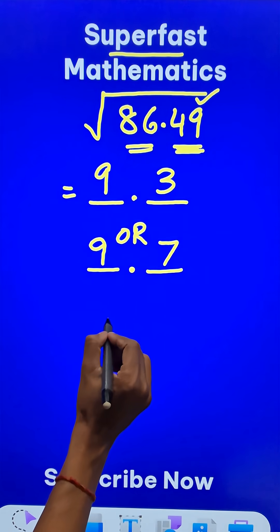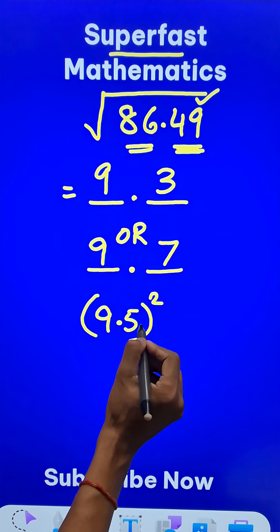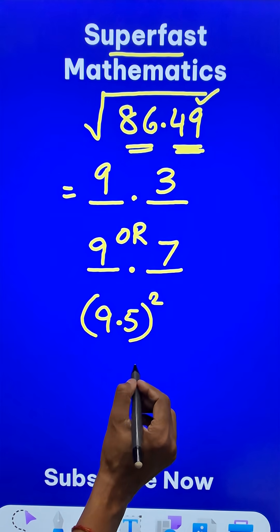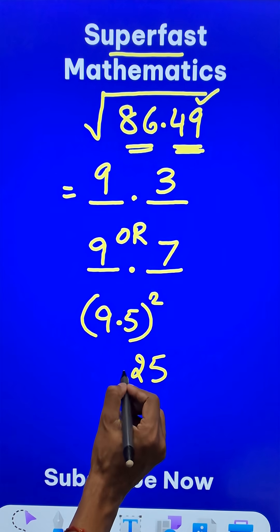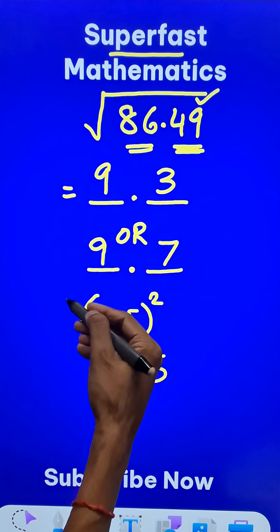Now for that I will try to do 9.5 square. What is 9.5 square? Any number ending in 5, its square is going to end in 25 and 9 multiplied by its next number 10. 9 times 10 is 90. So I get 90.25.